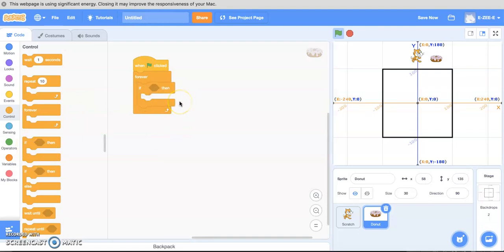So what we want this donut to do is give us points when we touch it. This is a very easy thing to do.